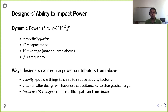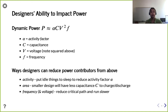Given this power equation — something architects and designers keep in mind — how can you attack these factors? For activity factor, even without trying it will be less than one, but you can push it down further. You can recognize when things are idle and put them to sleep, ensuring their activity factor is zero. As a designer, area also directly impacts power, since capacitance is proportional to area.